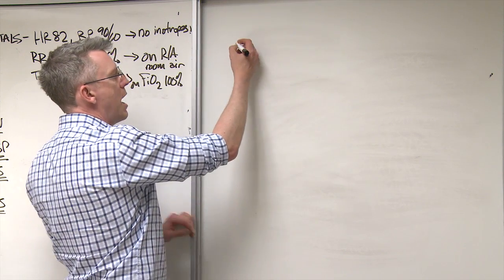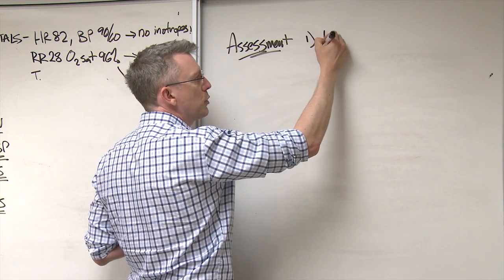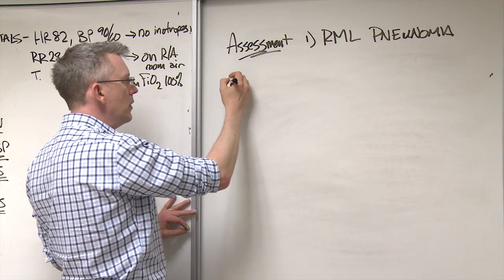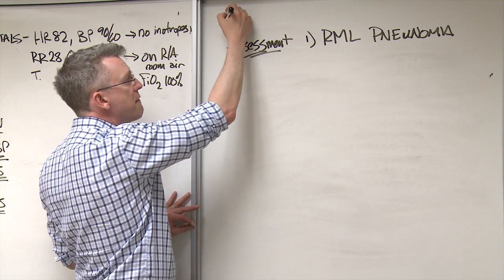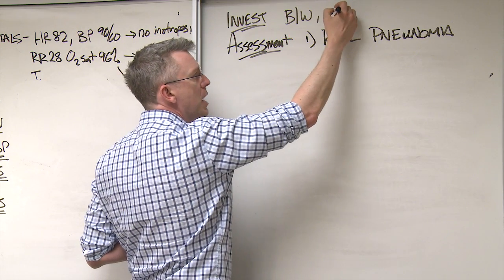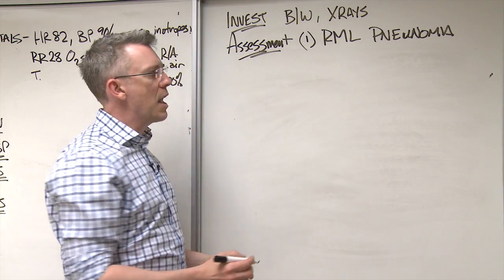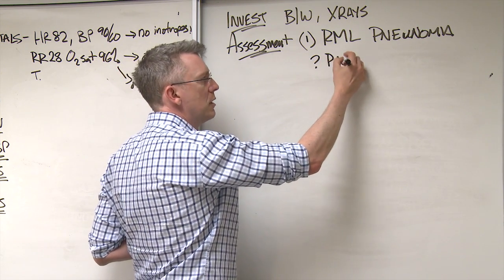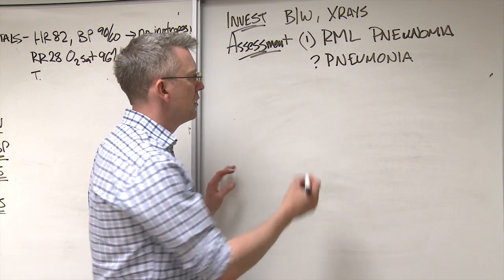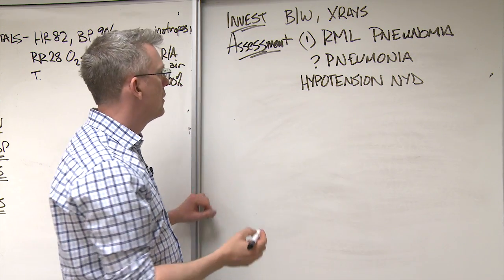Great. And then at the very bottom, underneath your physical exam, you're going to have your assessment. So it might be like what you think is going on, like right middle lobe pneumonia. And just before the assessment, if you have any findings, any investigations, you would have included them here. So you might have some blood work that might be there. You might have some x-ray, an x-ray report and so on. Any investigations will be there. And then your assessment, your diagnosis, what's going on. If you're not sure, you can always put query pneumonia if you're not sure. And sometimes people might have like a symptom but you don't know what it is, so it could be like hypotension, you don't know what it is.